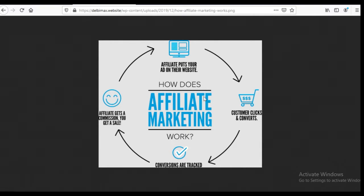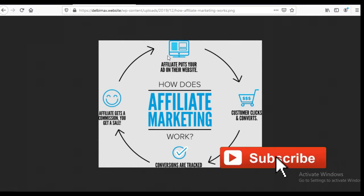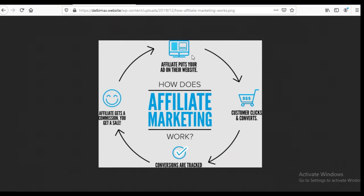Basically, how affiliate marketing works is you set up a website — in most cases a lead capture page where you capture people's email addresses. The reason for setting up a lead capture page is to build a database of people so that today you can market one product to them, and tomorrow you can market another product from the same affiliate platform.